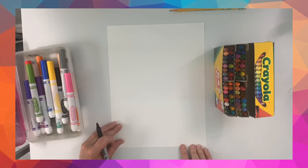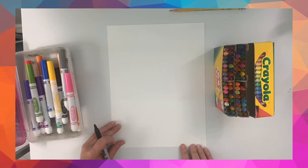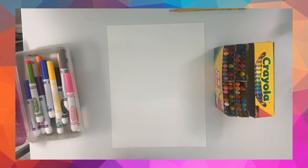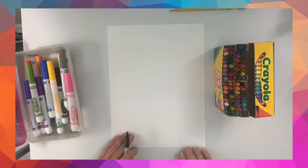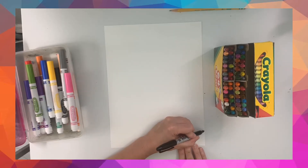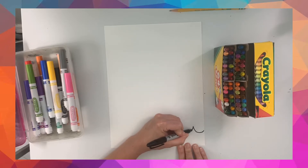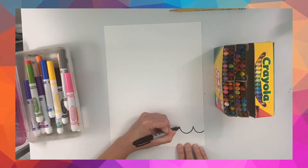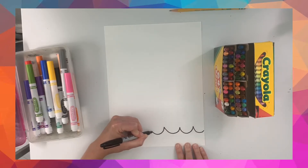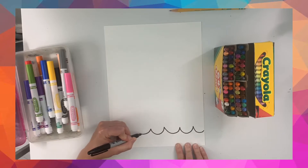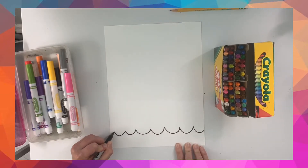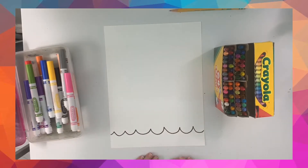The first type of line I'm going to draw is a bumpy line — you might also call it a wavy line. I'm going to start all the way at the edge and curve up and down so it looks like waves, all the way across.